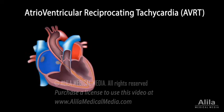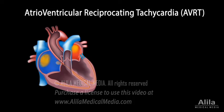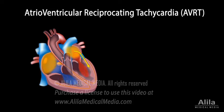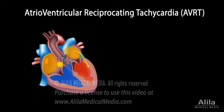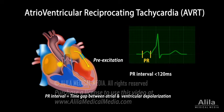In patients with AVRT, there is an additional connection — an accessory pathway — between the atria and ventricles. The pathway acts as a shortcut to the ventricles, bypassing the AV node. It allows part of the electrical impulses to arrive at the ventricles sooner, causing a so-called pre-excitation, which can be seen as a shortened PR interval on an ECG.